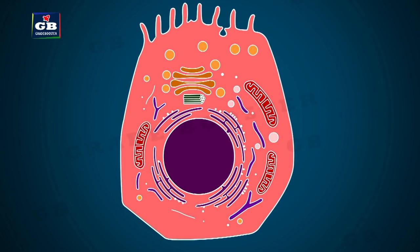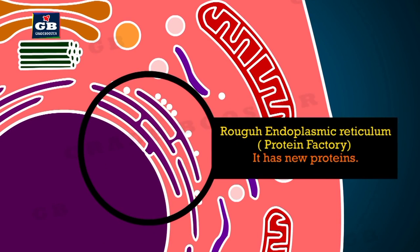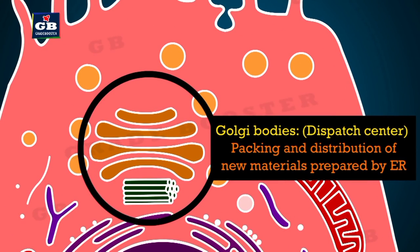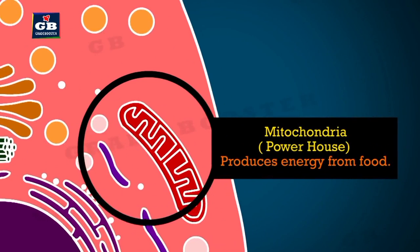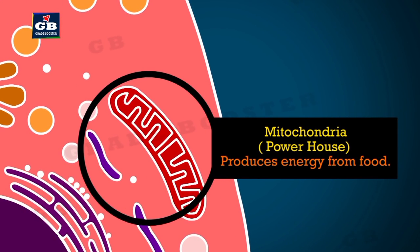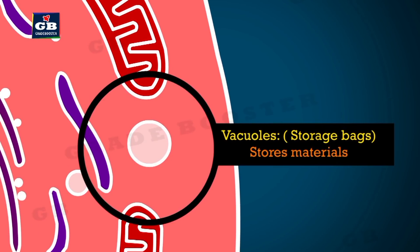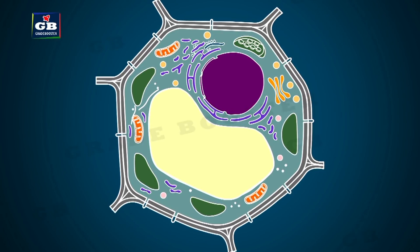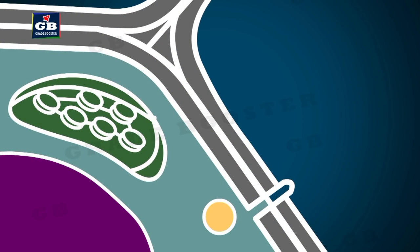Each organelle performs a specific function. Rough endoplasmic reticulum is called the protein factory because it makes new proteins. Smooth endoplasmic reticulum is called the fat factory because it makes new fats. Golgi bodies are called the dispatch center because they handle packaging and distribution of materials prepared by the endoplasmic reticulum. Mitochondria are called the powerhouse of the cell because they produce energy from glucose. Vacuoles are called storage bags. Lysosomes are called suicide bags because they contain digestive enzymes that digest foreign materials like bacteria and damaged cells. Plastids, found only in plant cells, are called pigment stores and also help in photosynthesis.